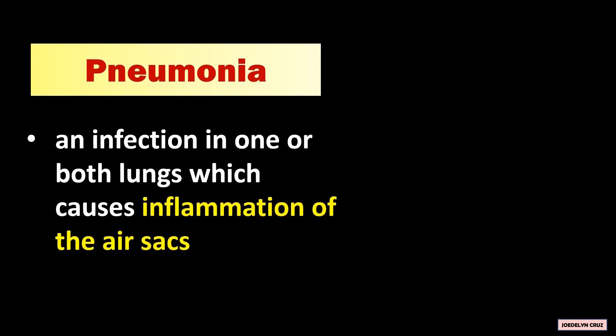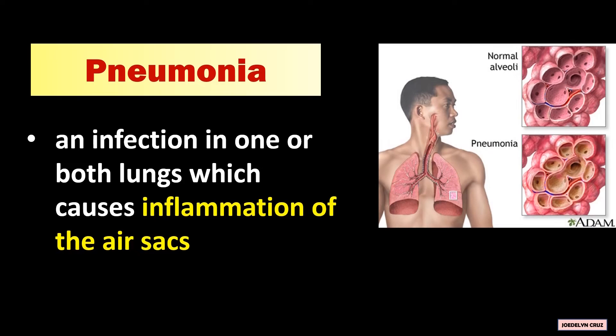Pneumonia is an infection in one or both lungs which causes inflammation of the air sacs. In this picture, these are the normal alveoli, while these are the inflamed alveoli.